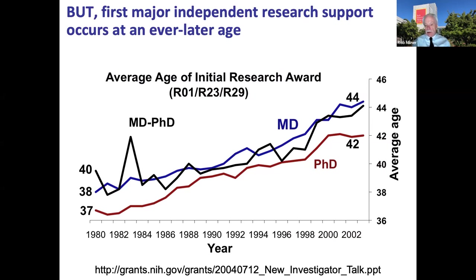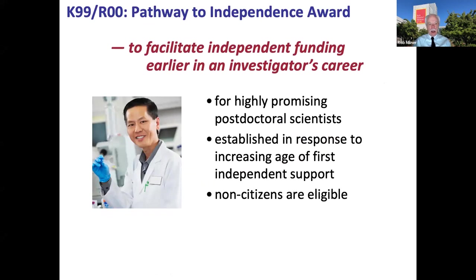What NIH observed over time was that the age at which individuals reached research independence was steadily increasing. These are now 20-year-old data, but from 1980 through to the early 2000s you can see the trend — by the early to mid 40s, people were getting their first R01. This was clearly not a good way of sustaining a research enterprise, and so various steps were put in place by then NIH director Elias Zerhouni. One of those was the K99R00 Pathway to Independence Award, which has the specific goal of lowering the age at which you receive your first R01.